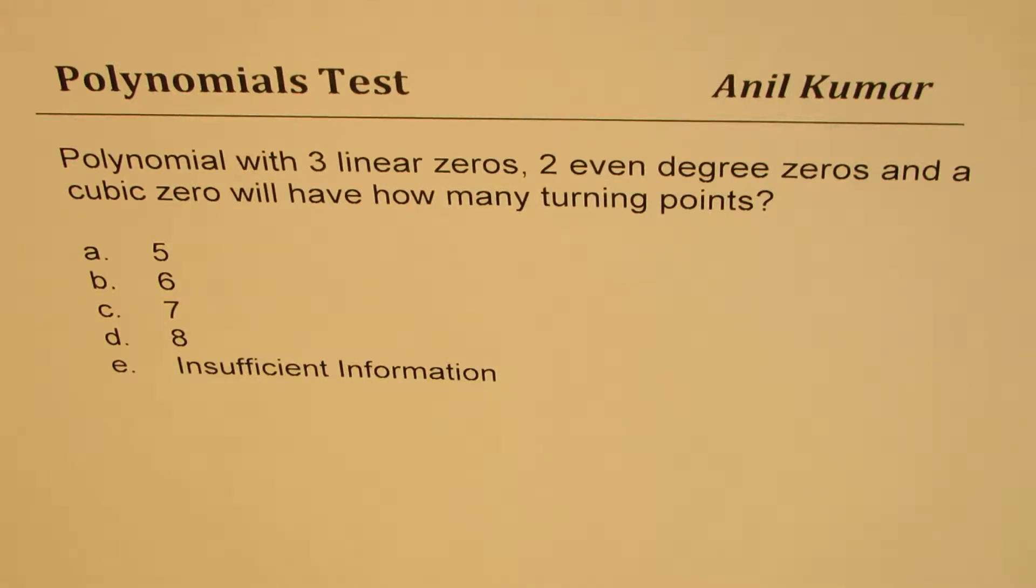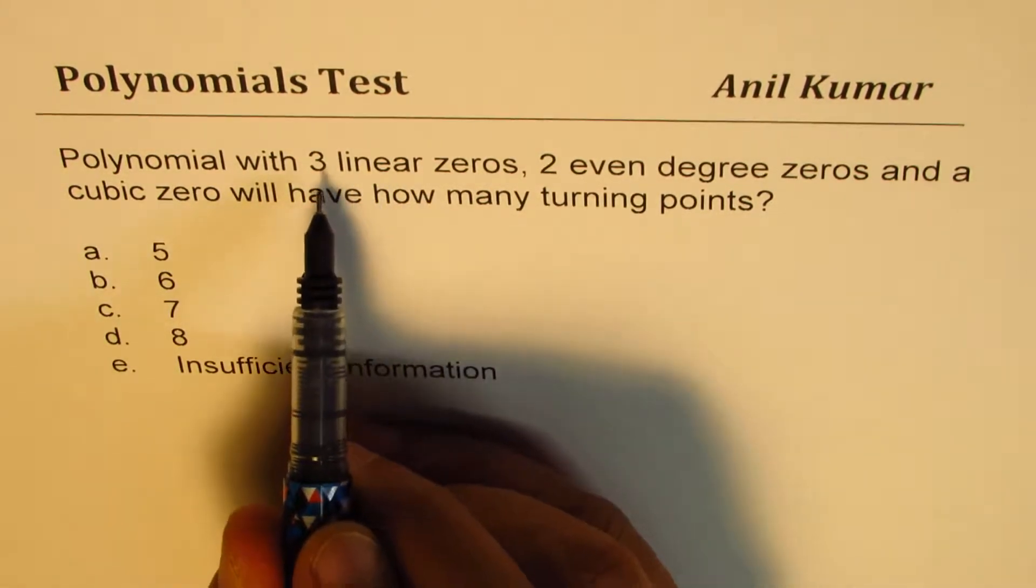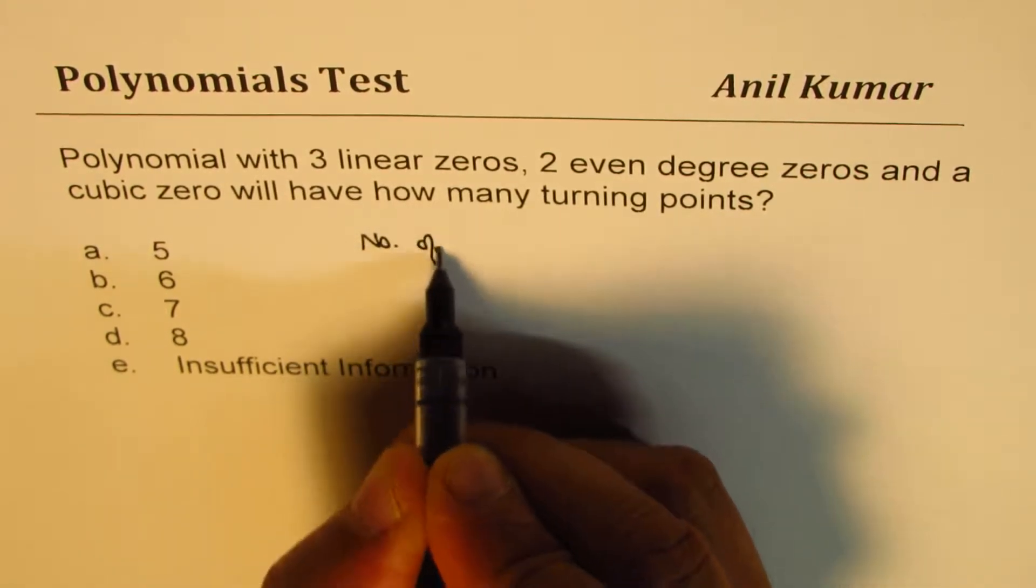You can pause the video, answer the question and then look into my considerations. So what we have here is three linear zeros, so let's count number of zeros.